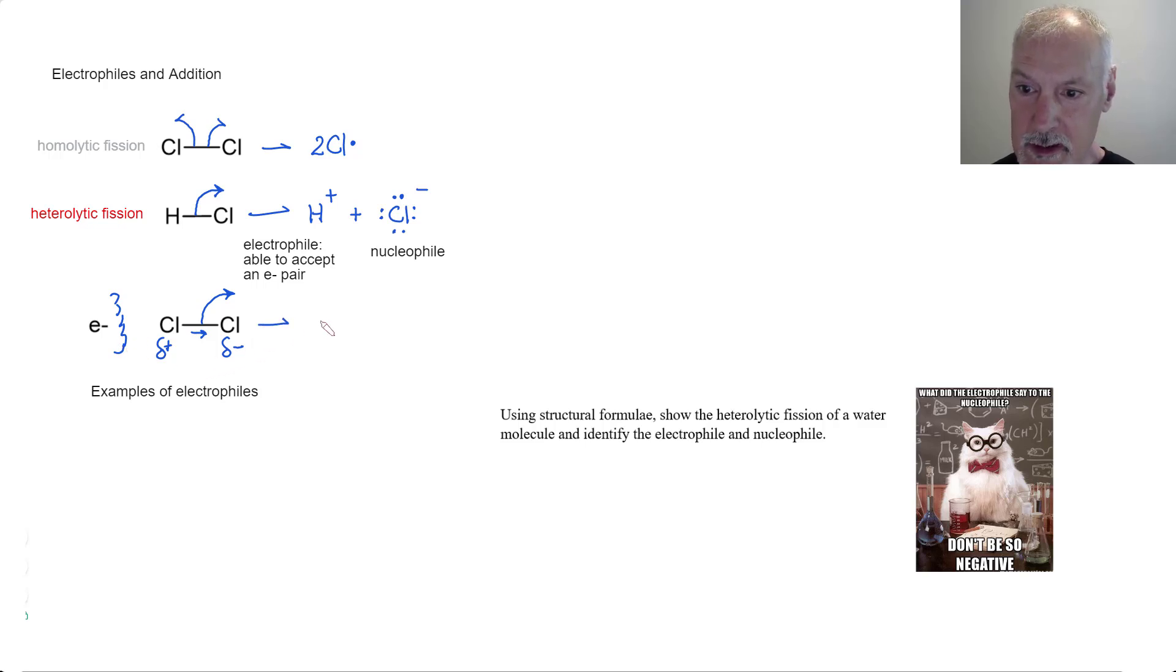This will then result in the production of chlorine with a positive charge and chlorine with a negative charge. Again, we have a chlorine plus that's willing to accept a pair of electrons and a chlorine minus that's willing to donate a pair. So in this environment, I can induce a halogen to behave by heterolytic fission.